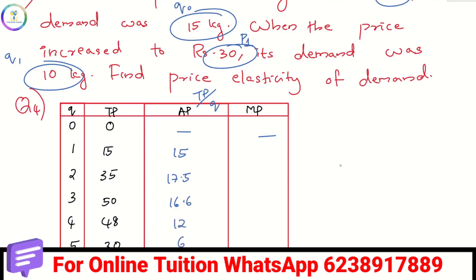For MP, we calculate the change in TP: 15 minus 0 is 15; 35 minus 15 is 20; 50 minus 35 is 15; 48 minus 50 is minus 2; 30 minus 48 is minus 18. These are the marginal product values.